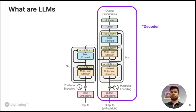Some examples of encoder-decoder networks are the T5 model. An example of an encoder-only model is BERT, which most of you might have used for sentence classification. Examples of decoder-only models are all the popular LLMs — Llama, Falcon, Free Willy, Mistral — and these models are generative models.